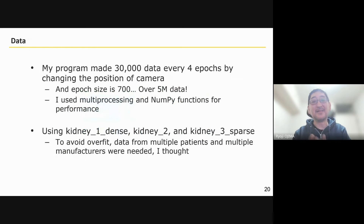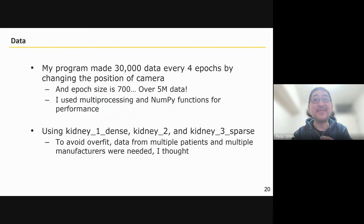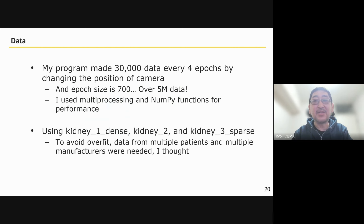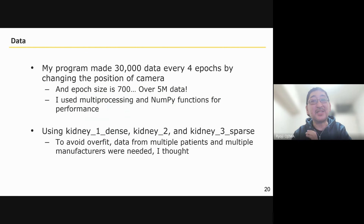My program generated 30,000 data every 4 epochs by changing the camera position and angle. With an epoch size of 700, my program used approximately 5 million data in total. Generating 5 million data is very time consuming, so I used multiprocessing and NumPy functions to speed up the process. I used KEDONI-1 dense, KEDONI-2, and KEDONI-3 sparse for training, because I thought multiple patients and multiple manufacturers were needed.